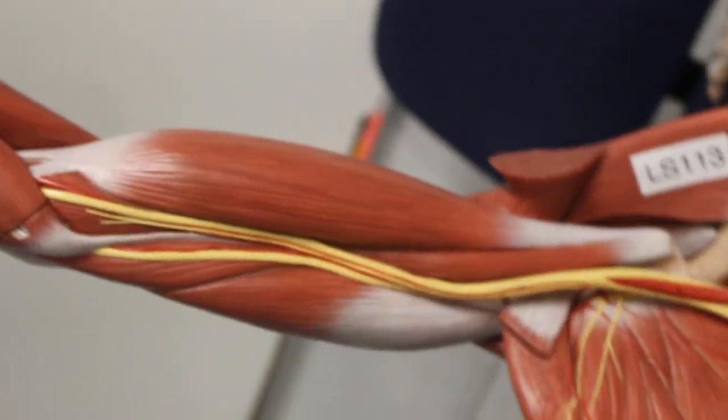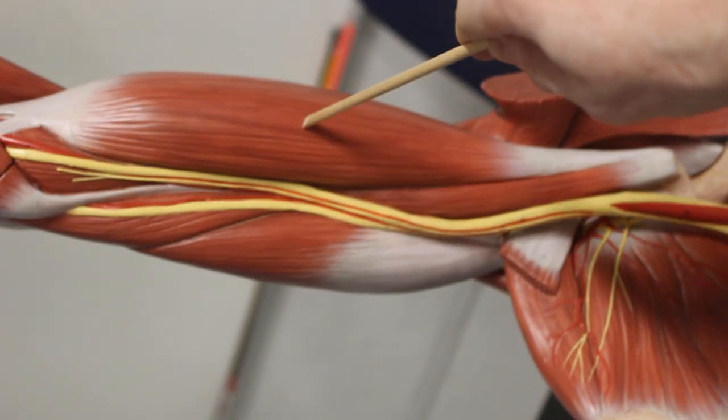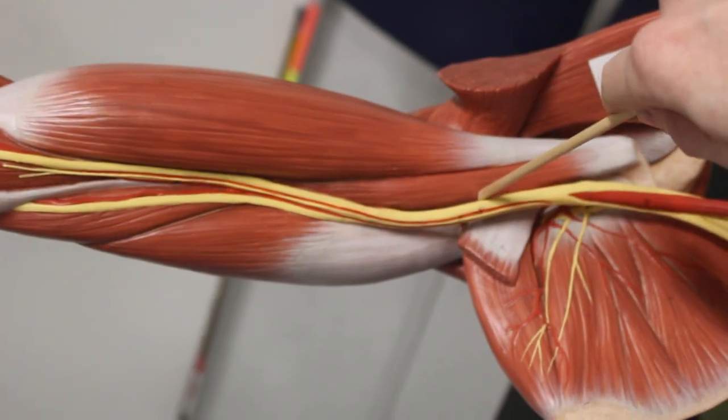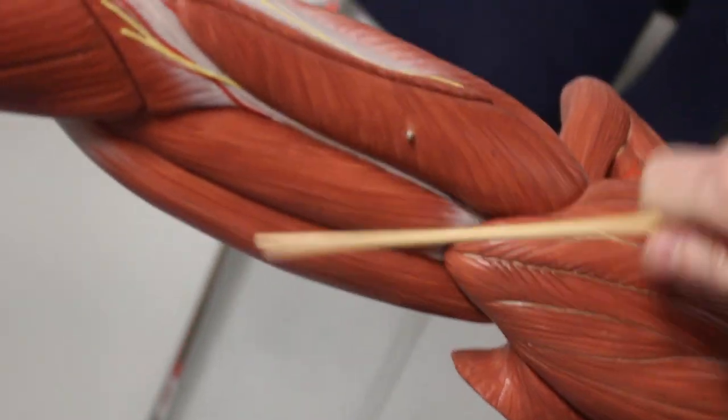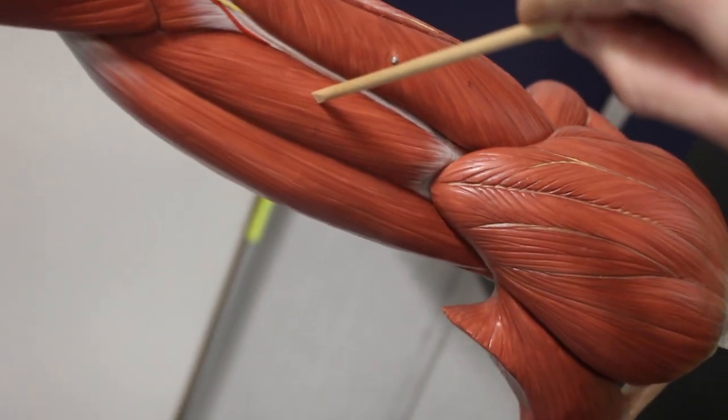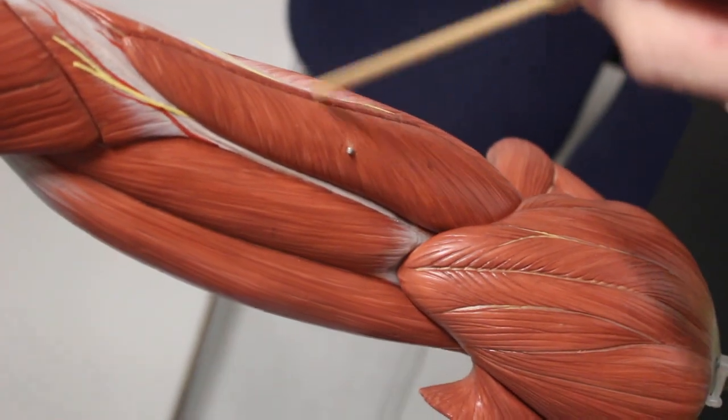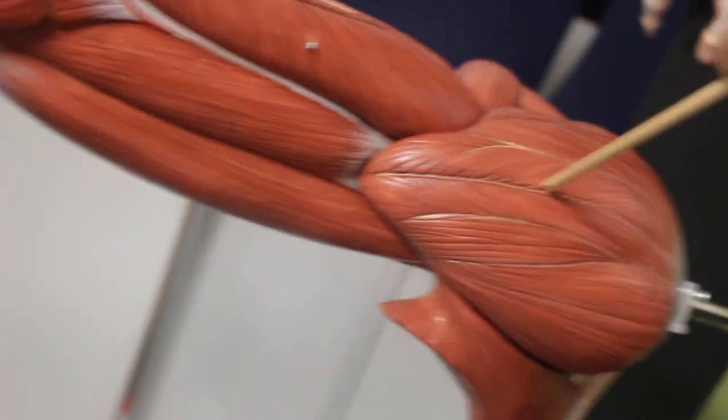Coming back, we have biceps brachii, this is coracobrachialis, this is all trapezius. To the other side, again, biceps brachii, this is brachialis, triceps brachii, deltoid muscle.